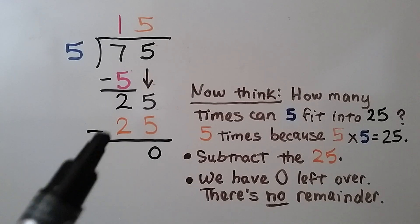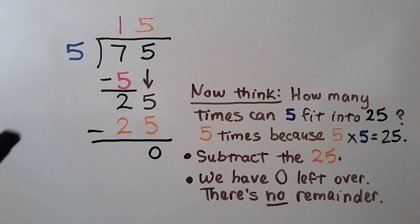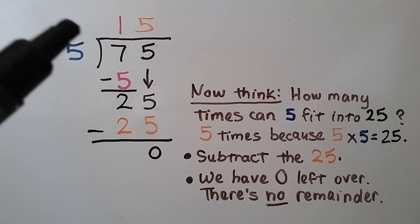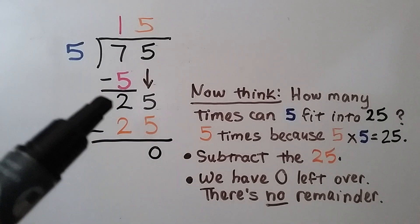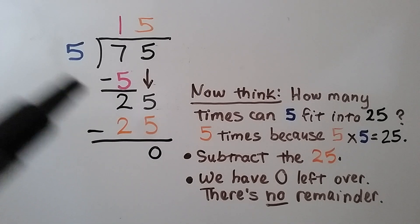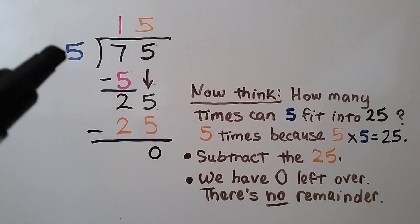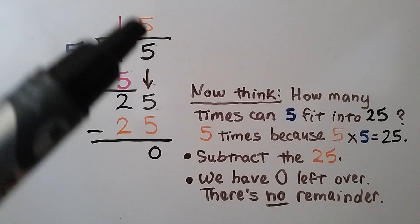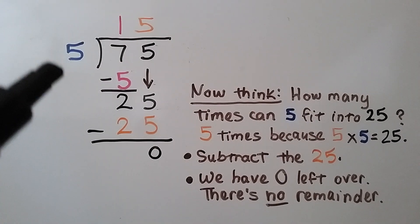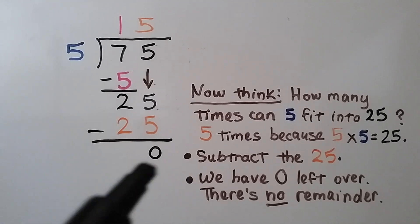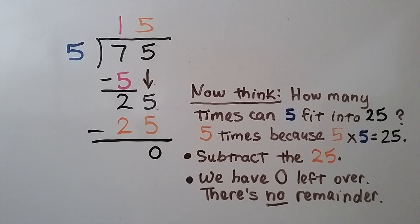After dropping the five down, we think: how many times can five fit into this twenty-five? Five times five is twenty-five, so we put a five above the ones place. We do five times five is twenty-five, do our subtraction, and get zero. We have zero left, so there's no remainder.